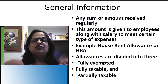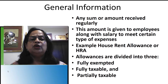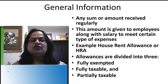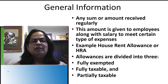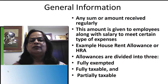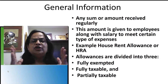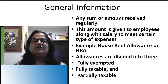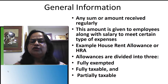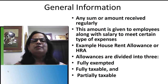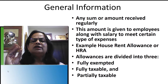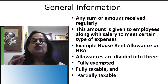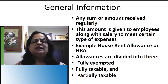Allowances are divided into three categories: fully exempted, fully taxable, and partially taxable. Please remember these topics are important for exam questions — you may be asked to list six or eight fully exempted items, fully taxable items, or partially taxable allowances. These are very important for theory as well as for doing salary computation problems.